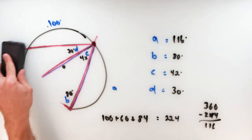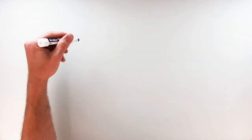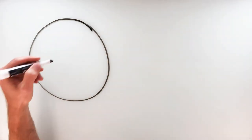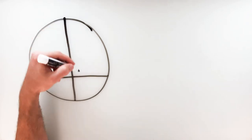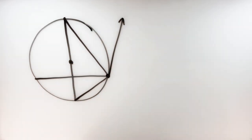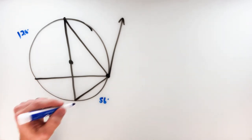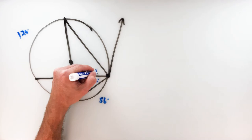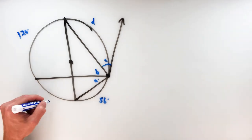Let's try another one — you can see why I call these circle puzzles, because there's really no definite place to start. This one has a diameter down the middle, a tangent line off the side, a 120 degree arc, and an arc of 56. We're looking for angles and arcs A, B, C, D, and E.